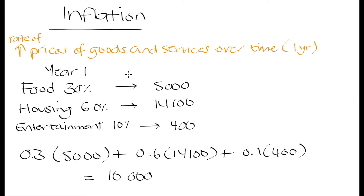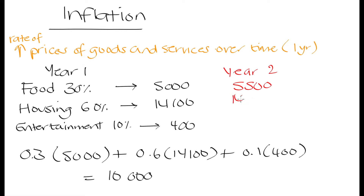So this was year one. Now let's say in year two, we still spent 30% on food, 60% on housing, and 10% on entertainment. But now the cost of food went up from 5,000 to 5,500, the housing cost went up to 14,500, and the entertainment cost went up to 410 Rand. So these percentages remain the same, but these prices have gone up slightly.